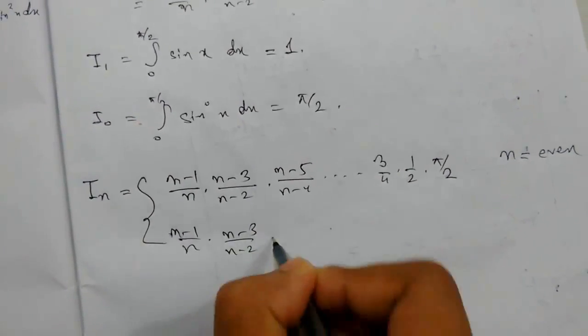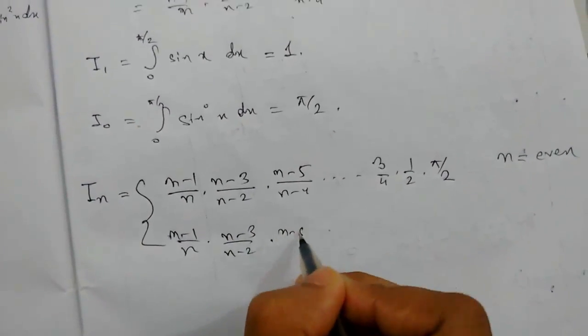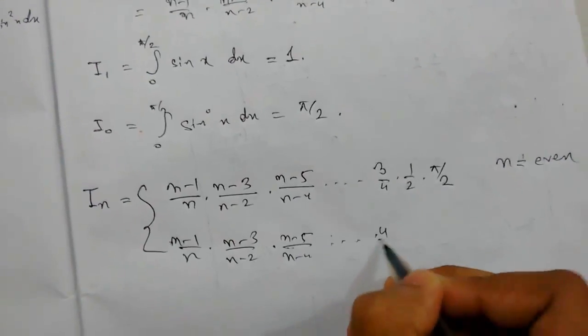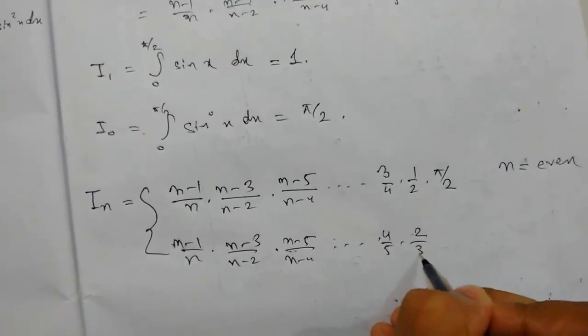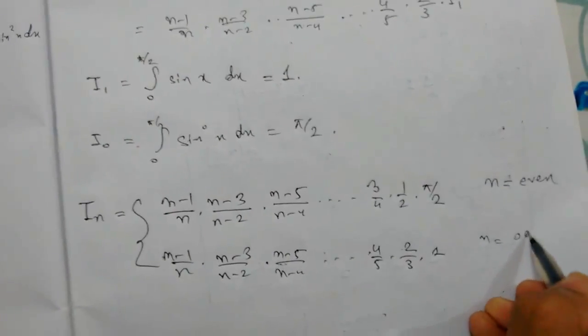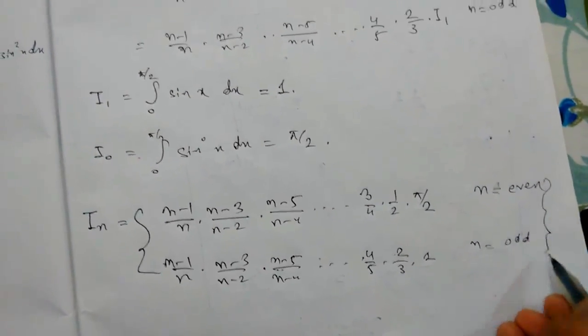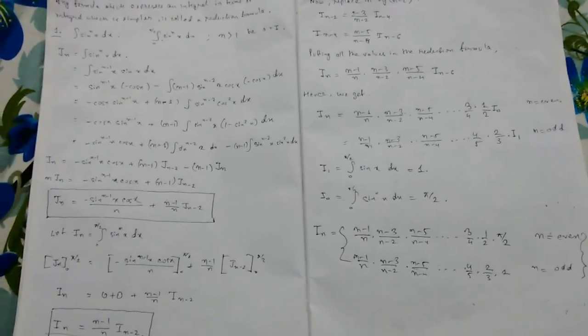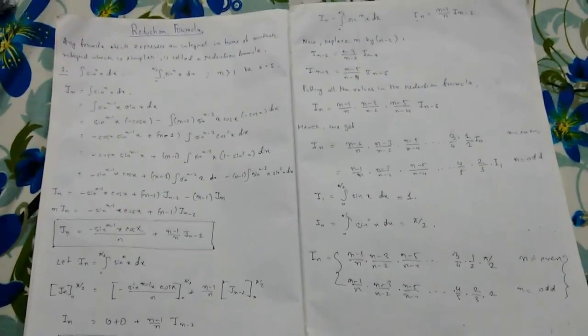For odd n, I_n = ((n-1)/n)·((n-3)/(n-2))·...·(4/5)·(2/3)·1. This is the complete value of I_n for this integral. If you had any problems comment below, and if you liked the video hit the thumbs up and subscribe for more videos. Thank you.